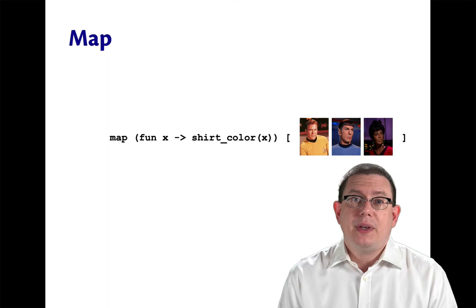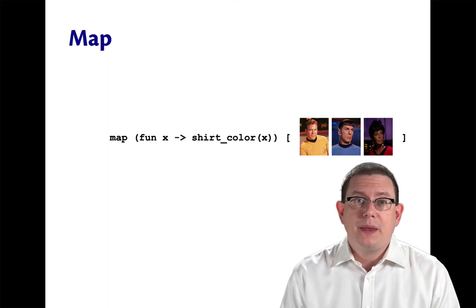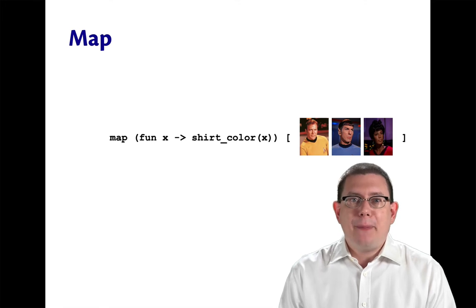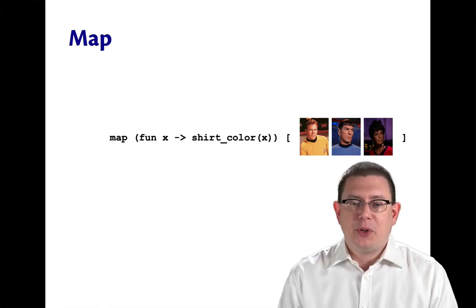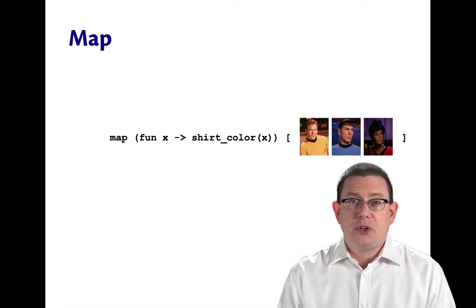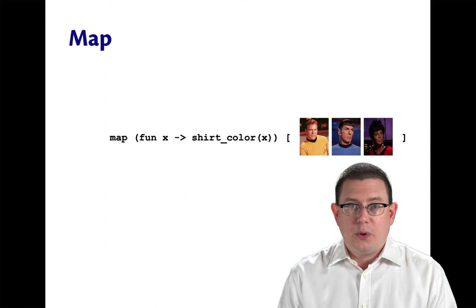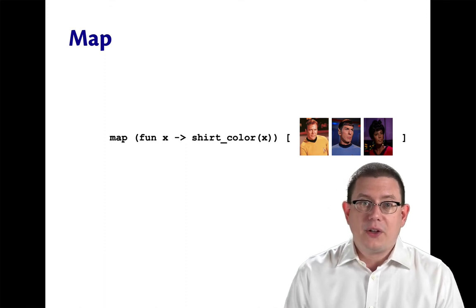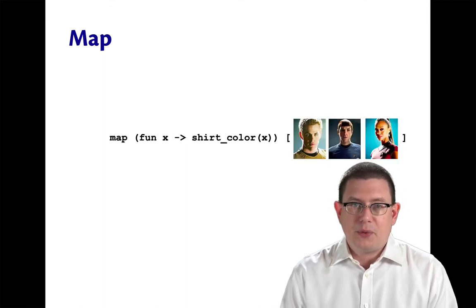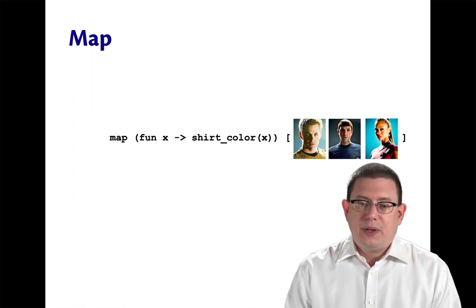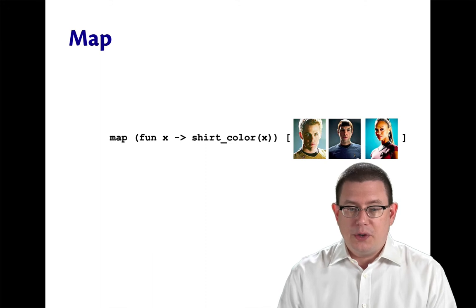Let's get started with map. Before looking at any code, let's just look at an example. Suppose you wanted to map some characters from a popular TV show, I've chosen Star Trek here, to their shirt color. Suppose you have three people: Kirk, Spock, and Uhura. Maybe if I replace them with the rebooted Trek, they're a little more recognizable. Either way, we've got a gold shirt, a blue shirt, and a red shirt.